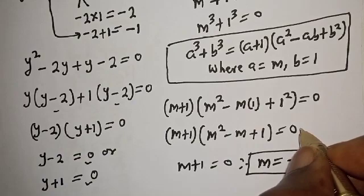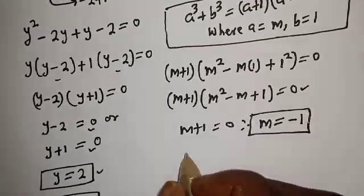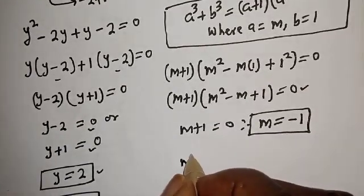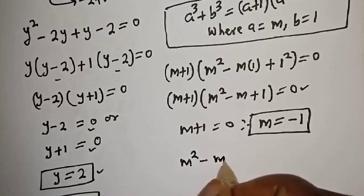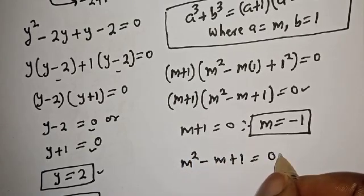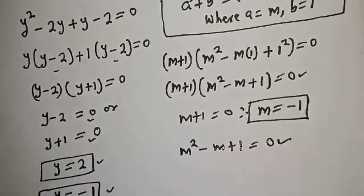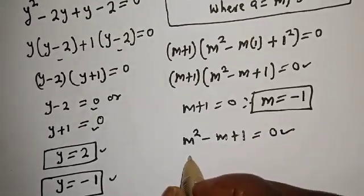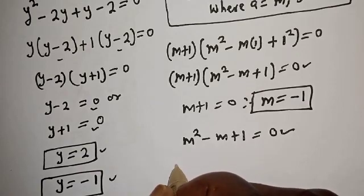There are two cases here. m plus 1 is equal to 0, therefore m is equal to minus 1. This is another value of m. Then from the second case, m squared minus m plus 1 is equal to 0, which is a quadratic equation. Let's solve this using the quadratic general formula.